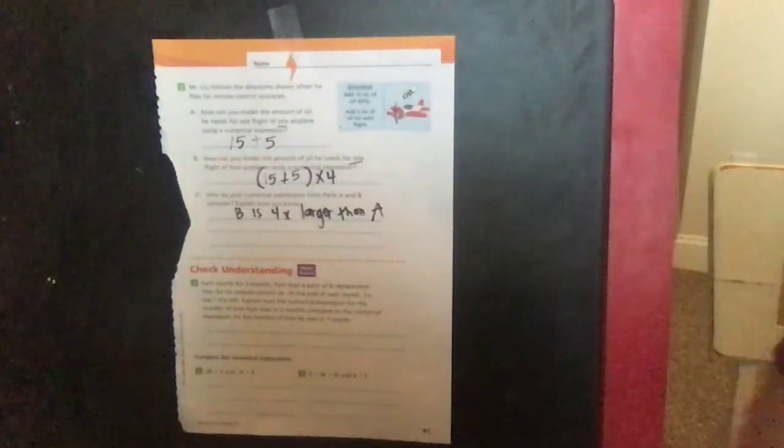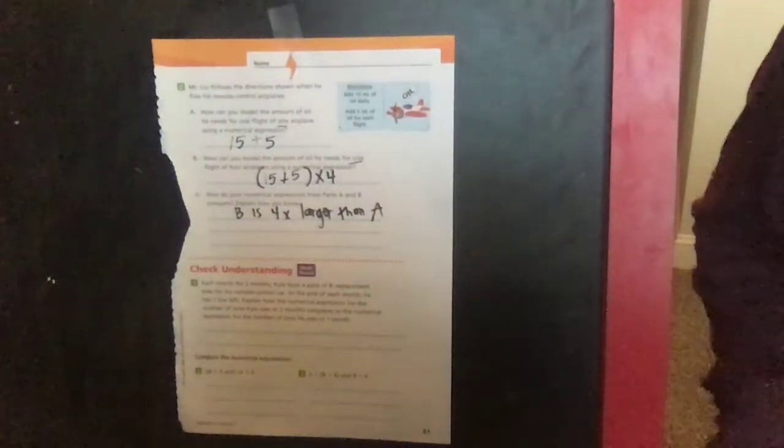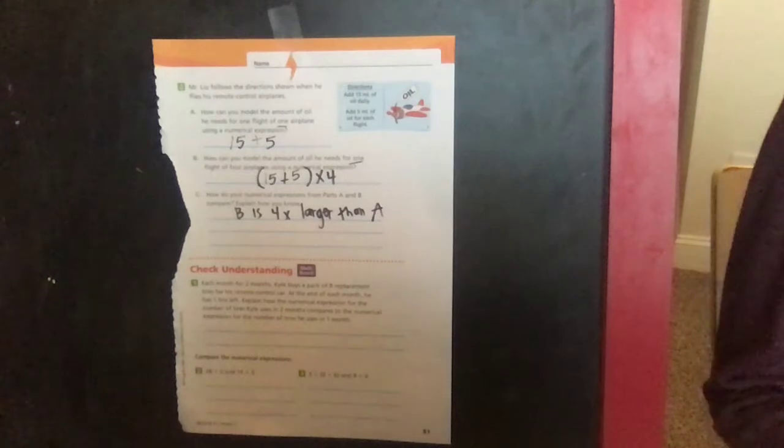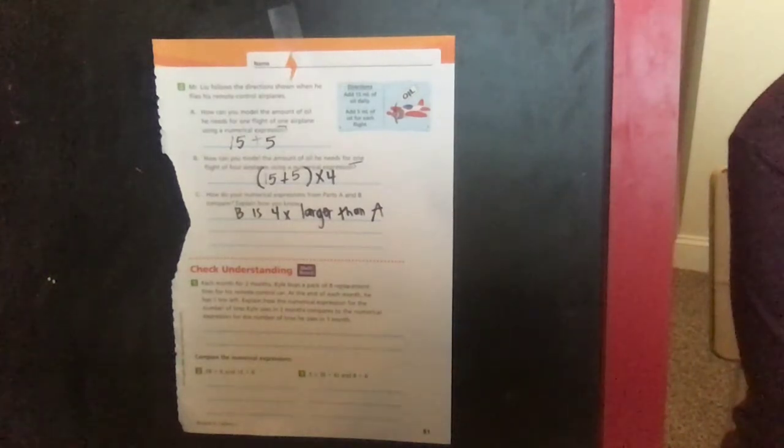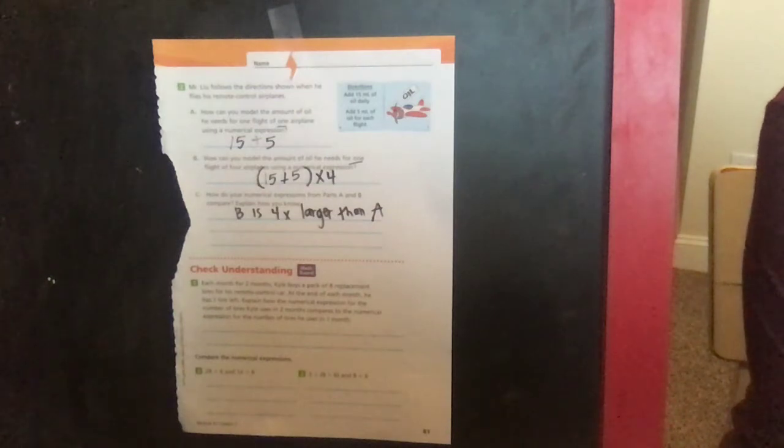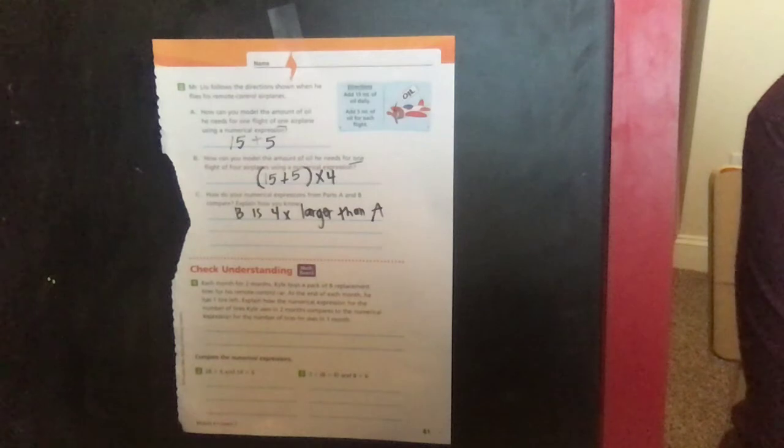So let's look at these three check your understandings. Number one says each month for two months, Kyle buys a pack of eight replacement tires for his remote control car. At the end of the month he has one tire left, he has worn out. Explain how the numerical expression for the number of tires Kyle uses in two months compares for one month.